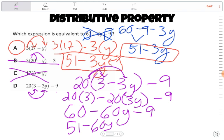And 51 minus 60y, that is not the same as 51 minus 3y. So the only answer that will work out here is A. That will give you an expression that is equivalent to 60 minus 3y minus 9. Alright, thanks for watching guys!